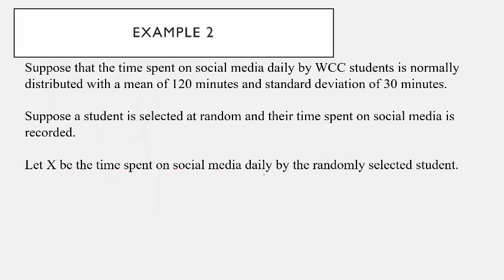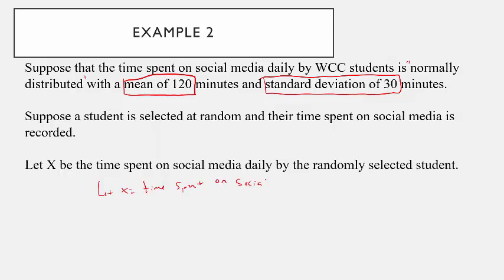Let's do one more problem. Suppose that the time spent on social media daily by WCC students is normally distributed, with a mean of 120 minutes and a standard deviation of 30 minutes. Suppose a student is selected at random and their time spent on social media is recorded. We're going to let X be the time spent on social media by a randomly selected student. We know X is normally distributed, with a mean of 120 minutes and standard deviation of 30 minutes.